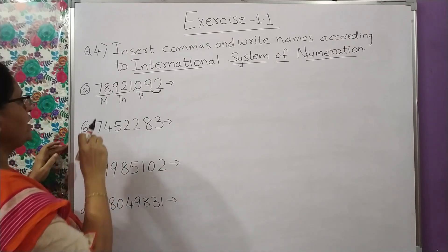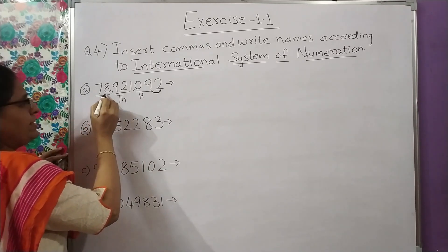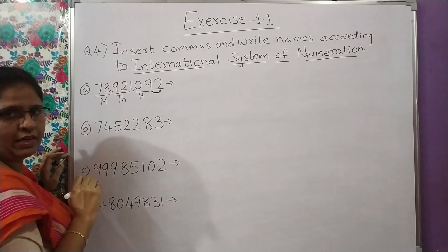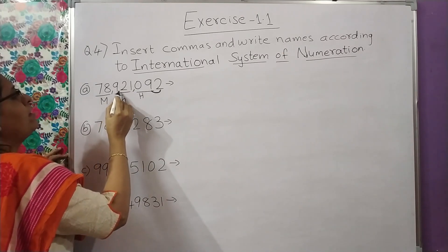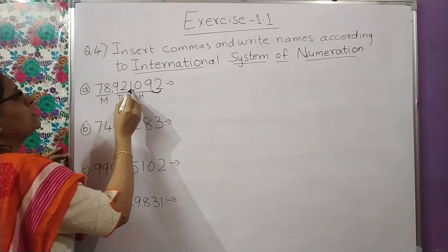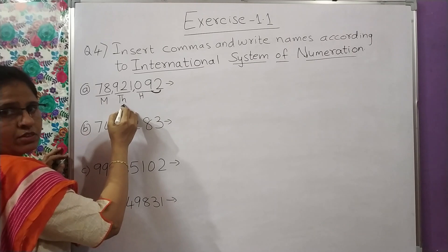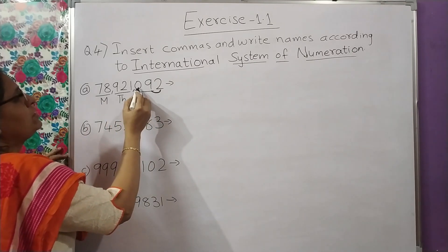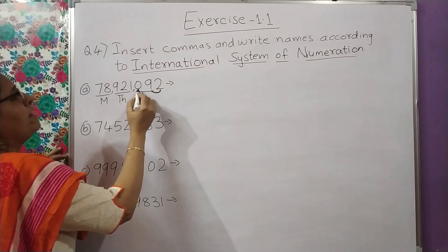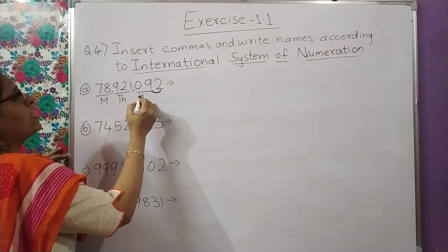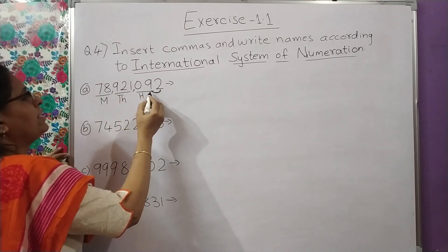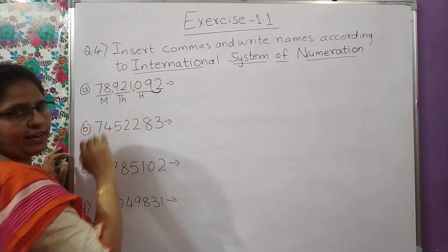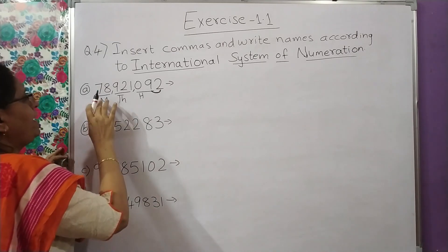Isko hum read karenge: seventy eight million, nine hundred, twenty one thousand. Zero hundred nahi bolenge — hundred ki jagah upar zero hai, toh iska kuch nahi likhna, direct likhenge ninety two.